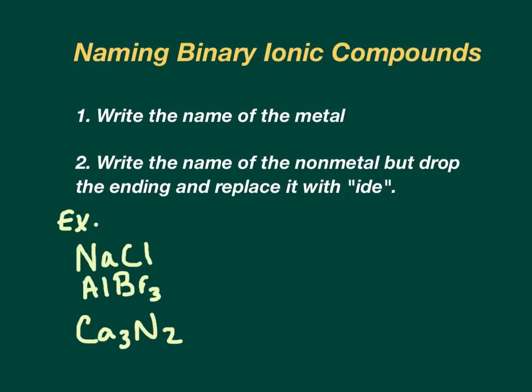Naming binary ionic compounds is really quite easy. All you have to do is write the name of the metal and then write the name of the nonmetal, but you drop the ending and replace that nonmetal ending with ide. It really doesn't matter about subscripts because there's only one way that ionic compounds can join up with each other in order to be stable. For sodium chloride, we write the name of the metal, sodium, and then the name of the nonmetal is chlorine, but we drop the ending and put ide at the end. So it ends up being sodium chloride.